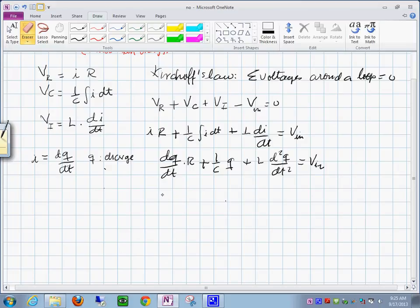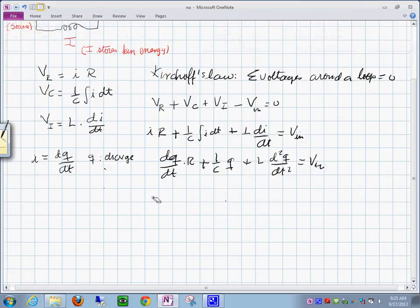That you have L times d squared q dt squared is equal to V initial minus dq dt times R minus 1 over C times q.